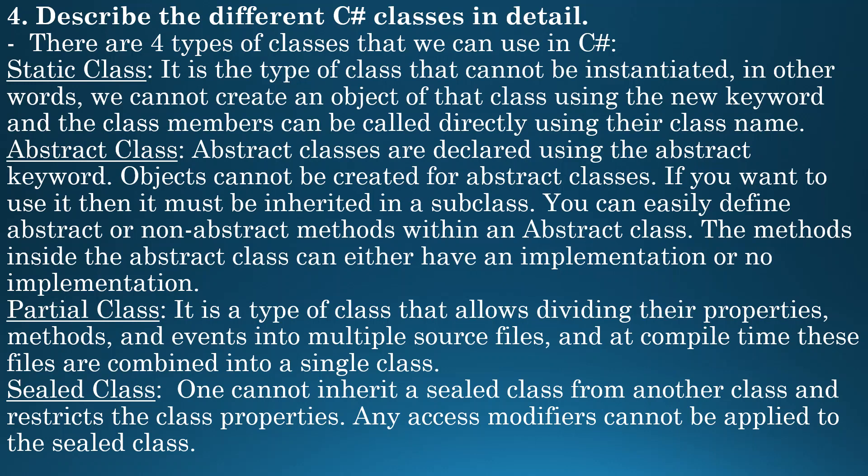Then the next is partial class — it is a type of class that allows dividing their properties, methods, and events into multiple source files. At compile time, these files are combined into a single class. Then next comes the sealed class — one cannot inherit a sealed class from another class and it restricts the class properties. Any access modifiers cannot be applied to the sealed class.